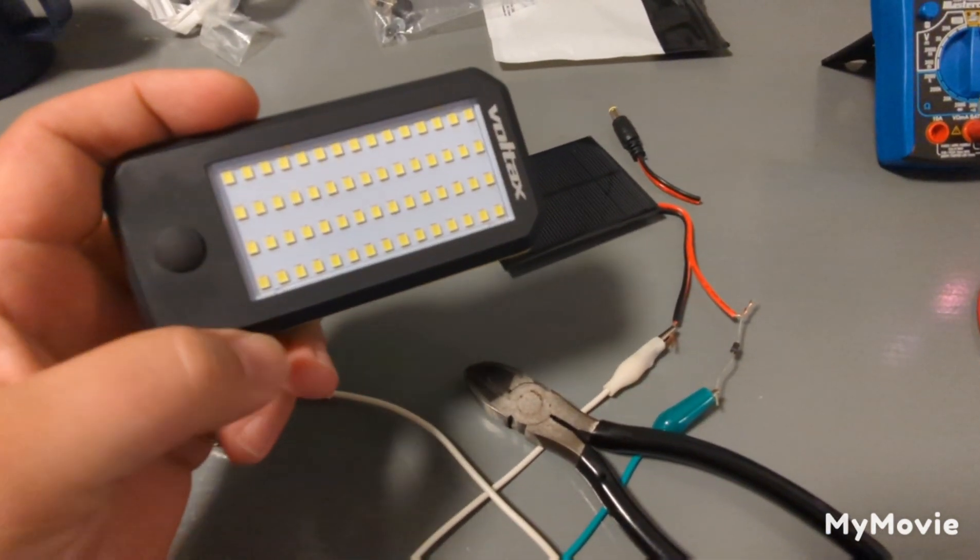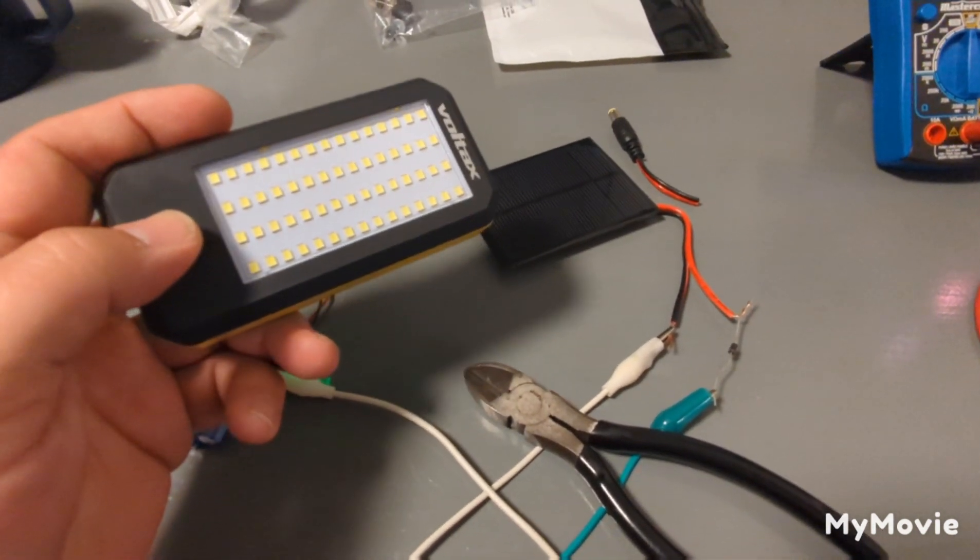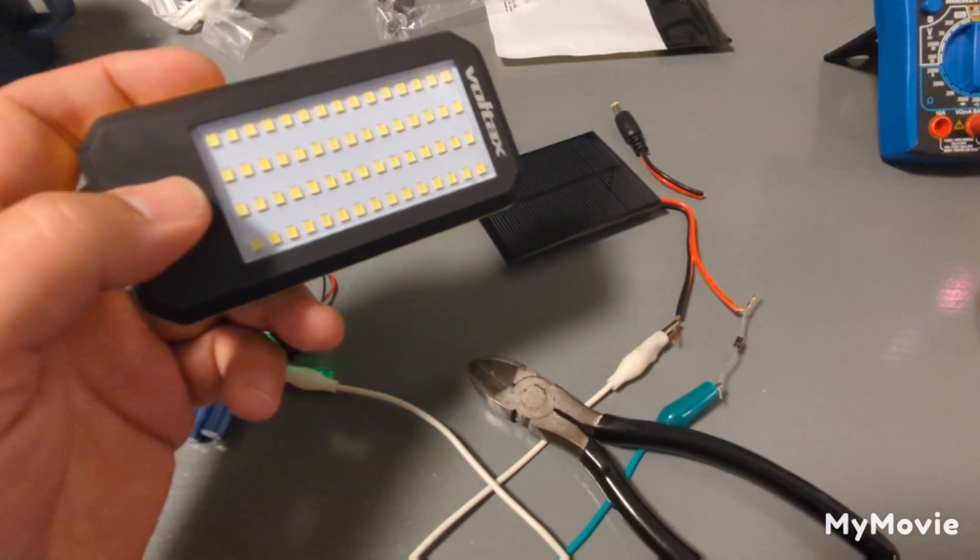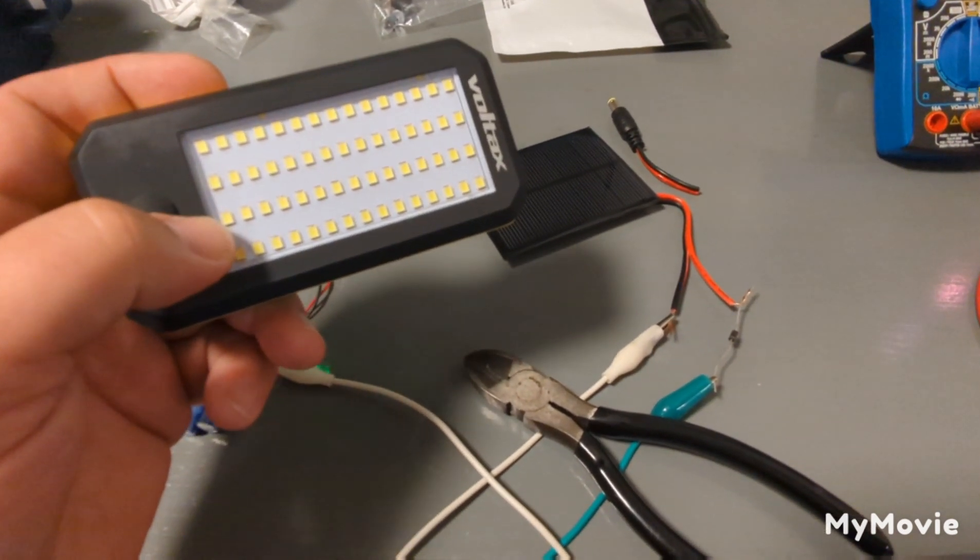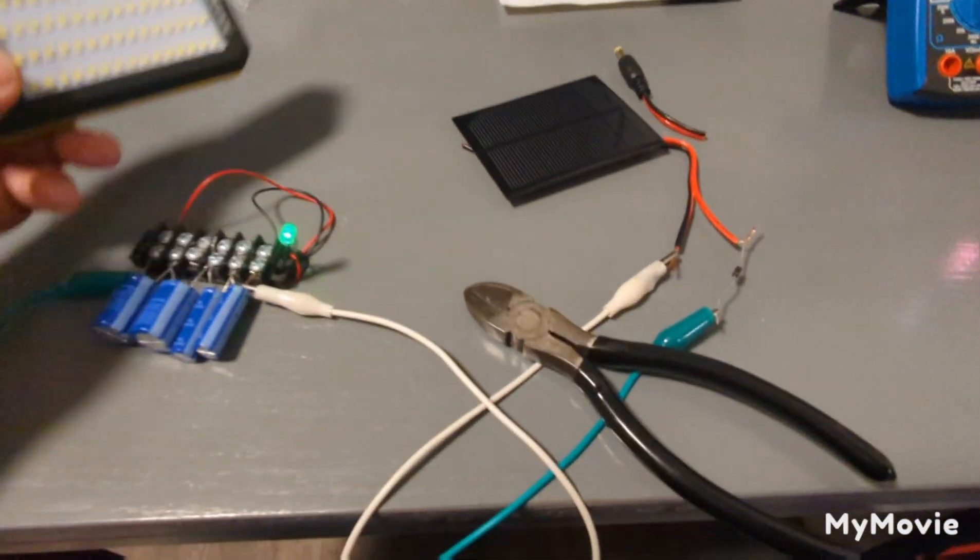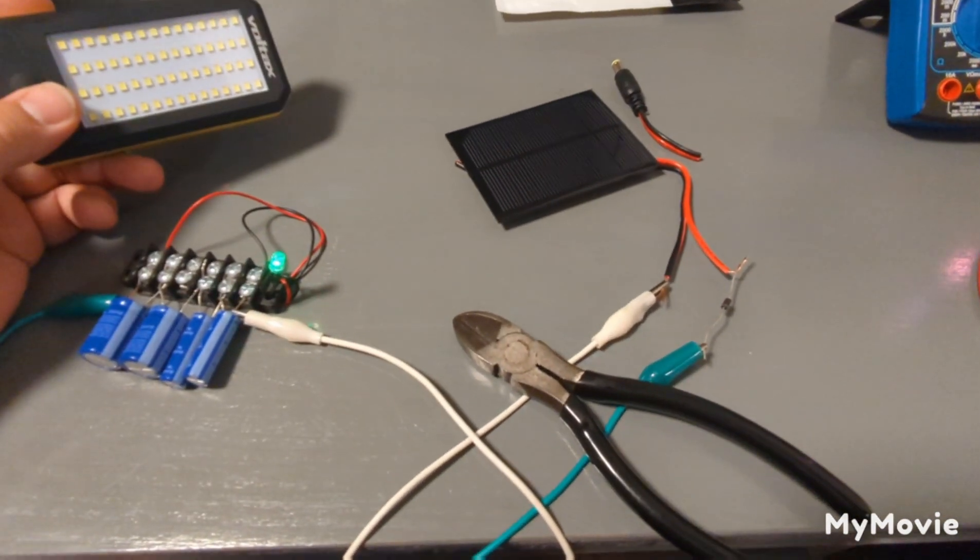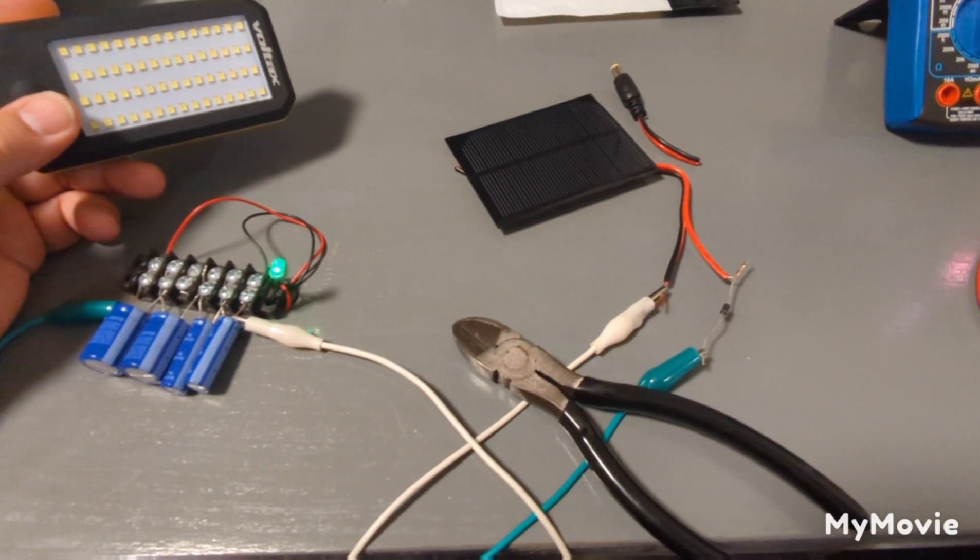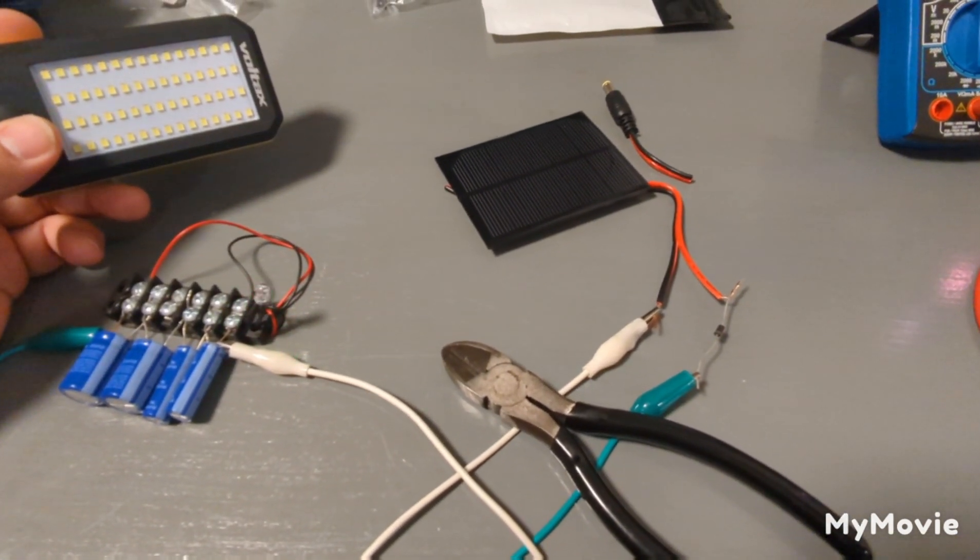It takes three triple-A batteries, so it takes four and a half volts to run it. It's one of those safety lights - the lights go out and you can use this to see around the room. These lights are extremely bright. This solar panel is 5 volts, it only puts out about 50 milliamps of current.